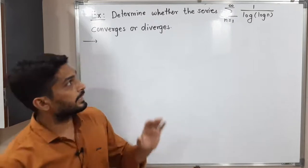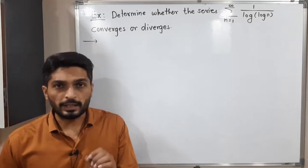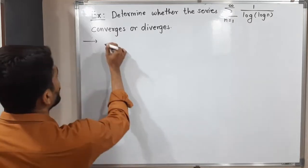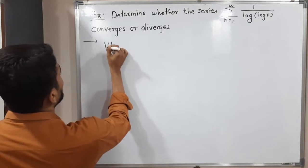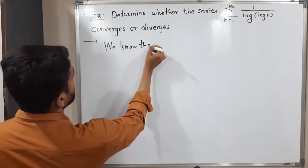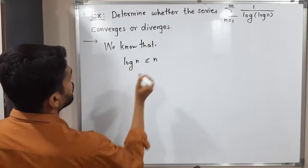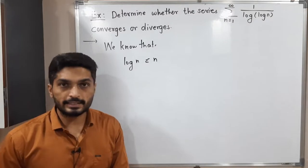So let us consider that term 1 upon log of log n. We know a very basic thing, let me write it here. We know that log n is less than or equal to n.